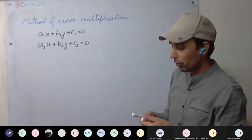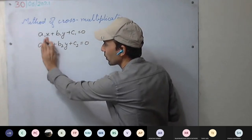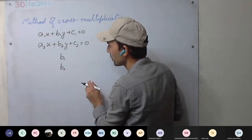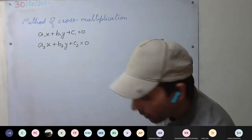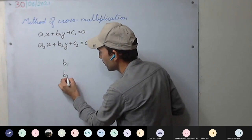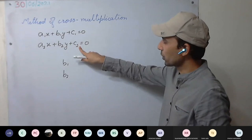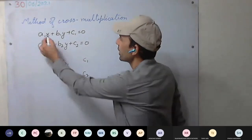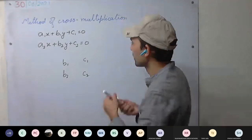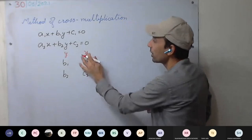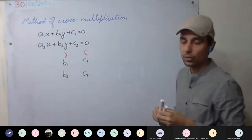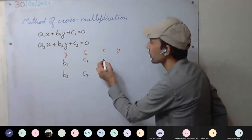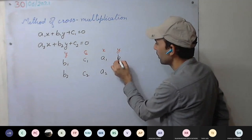To proceed, we write the coefficients starting not with x but with y. So we write b1, b2 — these are the coefficients of y. Then we write the constant terms c1, c2. Then again we start with the x coefficients a1, a2, and then b1, b2.